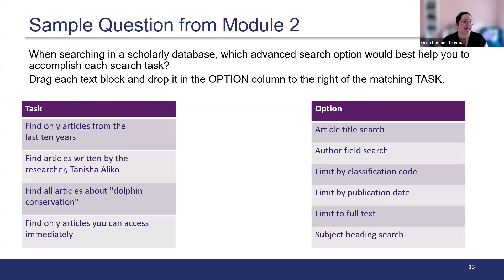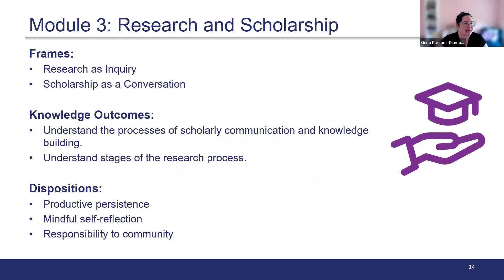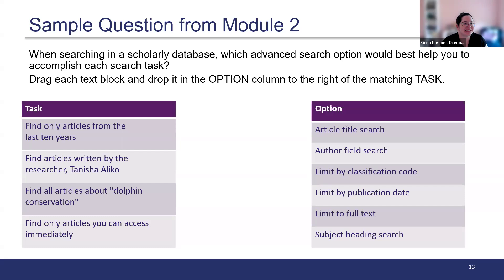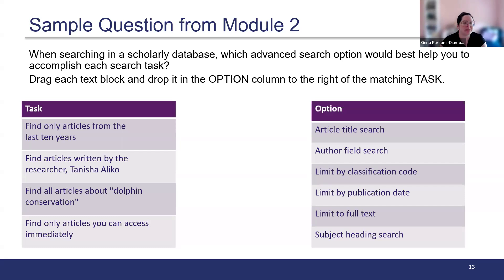Here we have a sample question from Module 2: when searching in a scholarly database, which advanced search options would be best to help you accomplish each task? Each task would be matched with a search option that gives the best results. For Task 1, Find Only Articles in the Last 10 Years, students would want to select the option Limit by Publication Date, and so on.